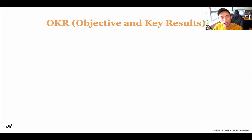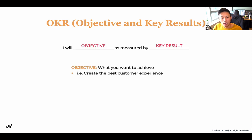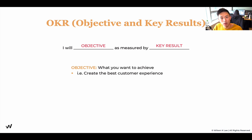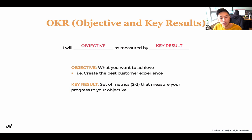First terminology: OKR — Objective and Key Results. The format is: I will achieve this objective, as measured by these key results. So first, what is an objective you want to achieve within your business or campaign? Specifically: I want to create the best experience for my customers. When you have this objective, if you don't back it up with data or measurable results, then there's no way your team can be held accountable. That's why we need to identify key results and set metrics that measure the progress of your objective.